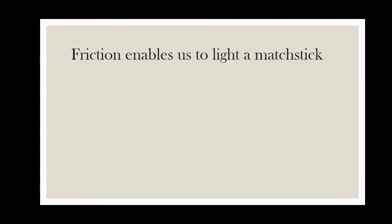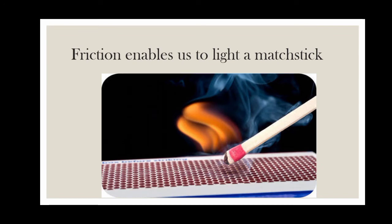The next advantage: friction enables us to light a matchstick. When we rub a matchstick against the rough surface of a matchbox, friction between the head of the matchstick and the rough side of the matchbox produces heat. This heat burns the chemicals present on the head of the matchstick, due to which the matchstick lights up. The burning of a matchstick would not be possible without friction.